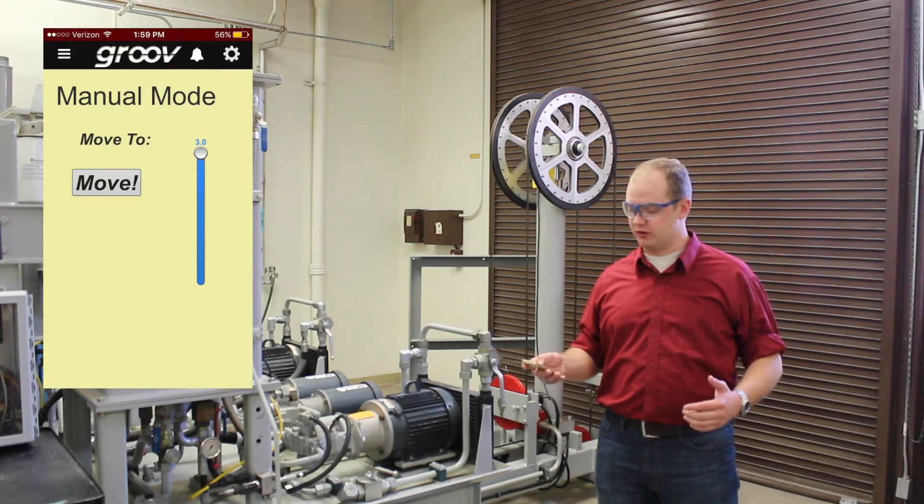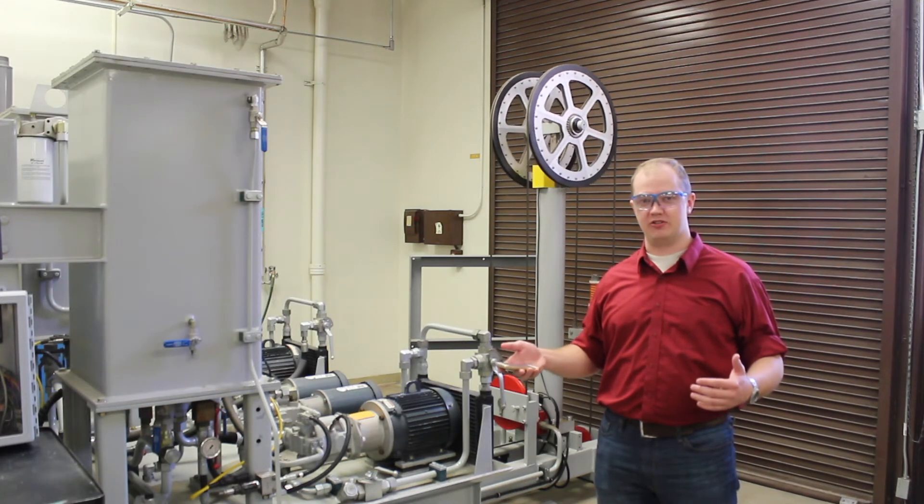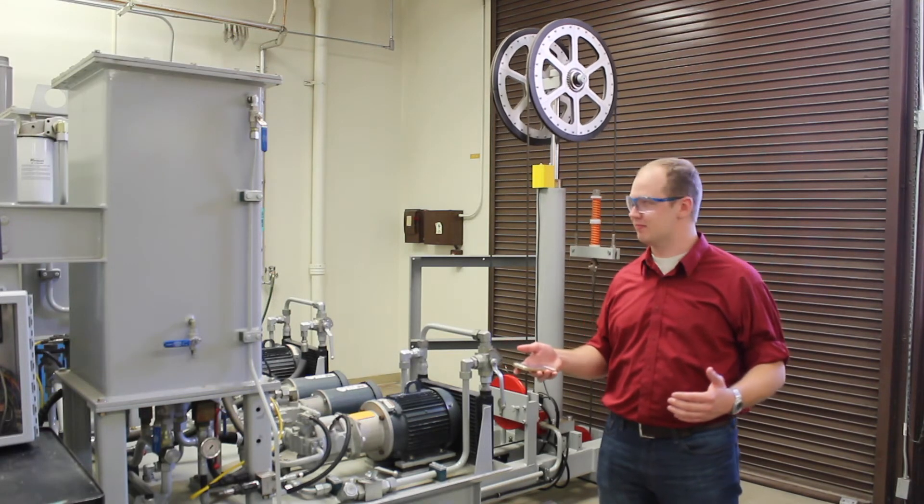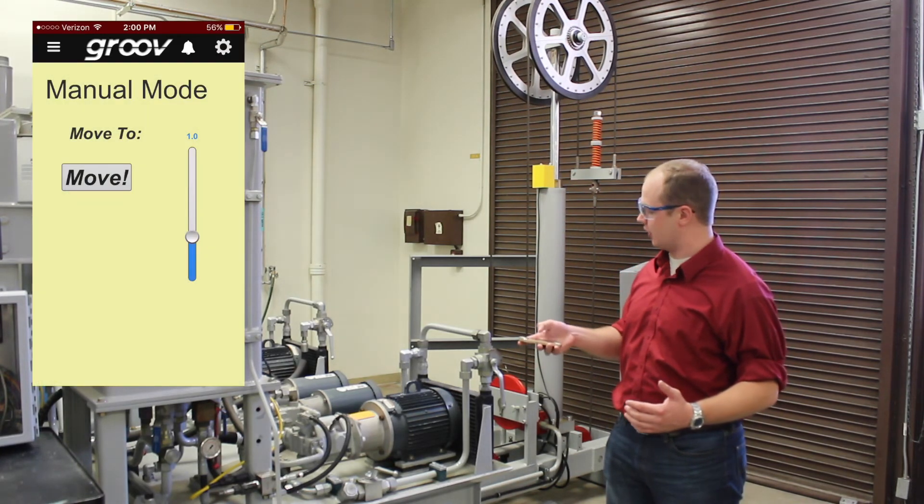If I was to move the position up on the graph and then send the move command, the piston will move to that given position behind me and I can change it to wherever I would like it to go.